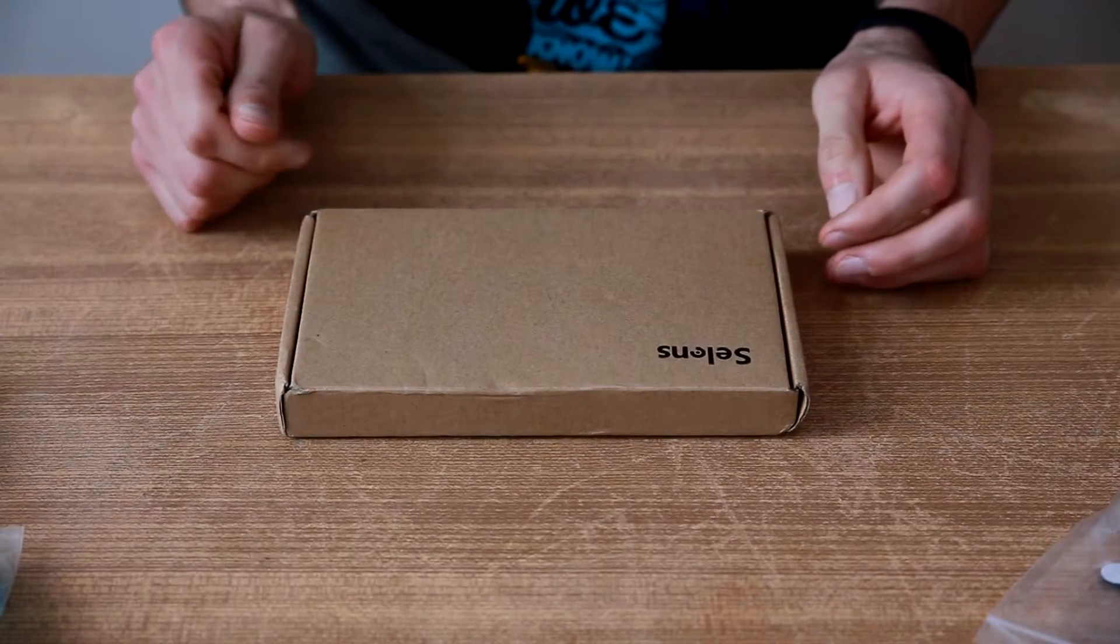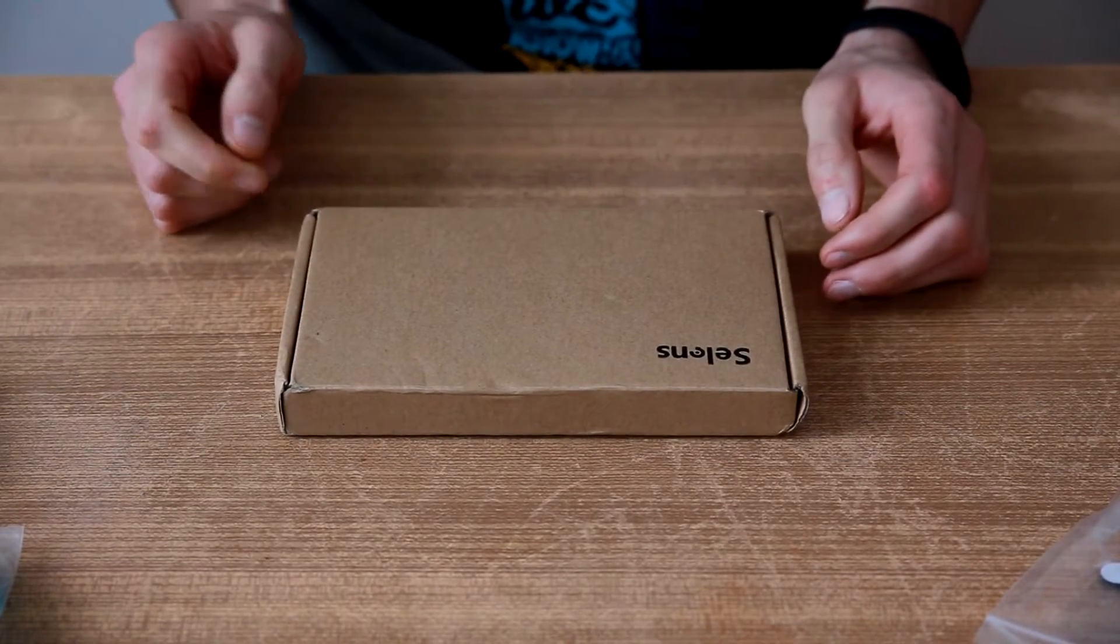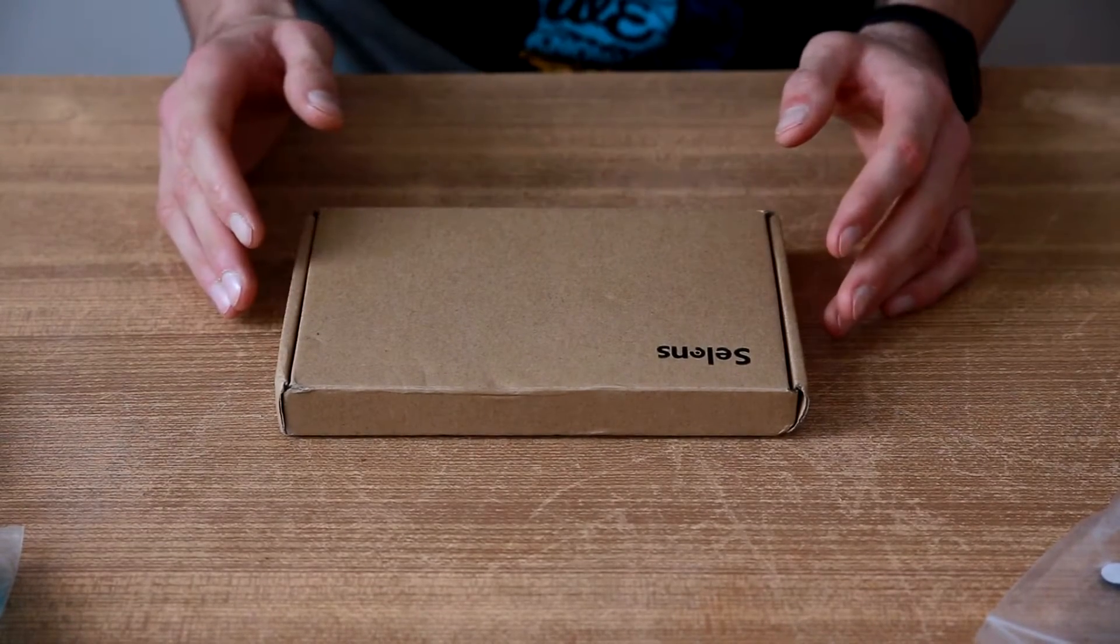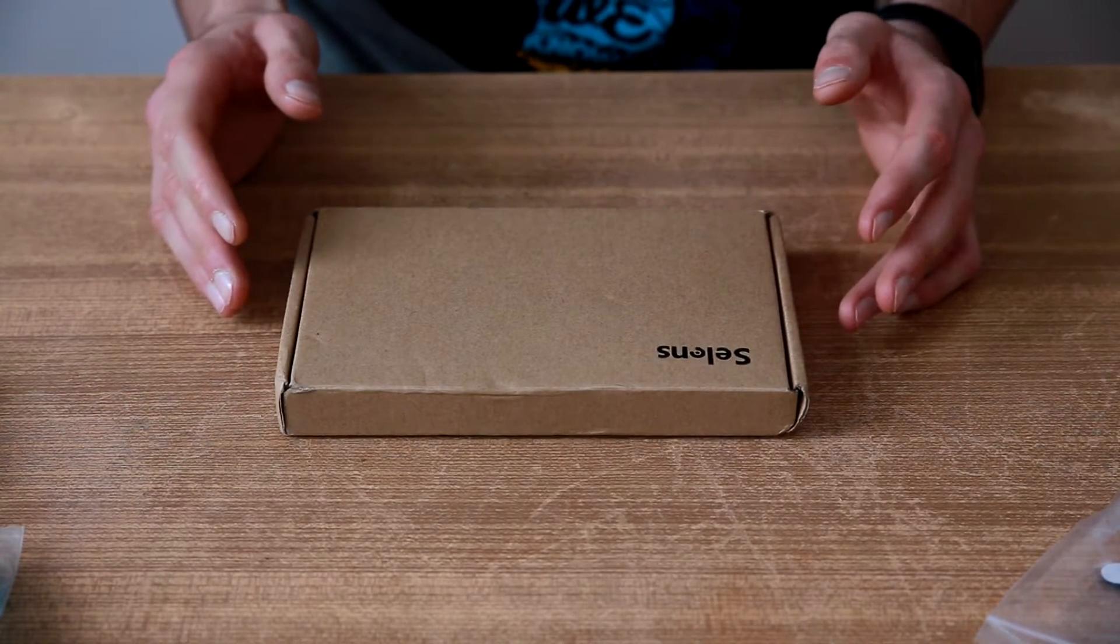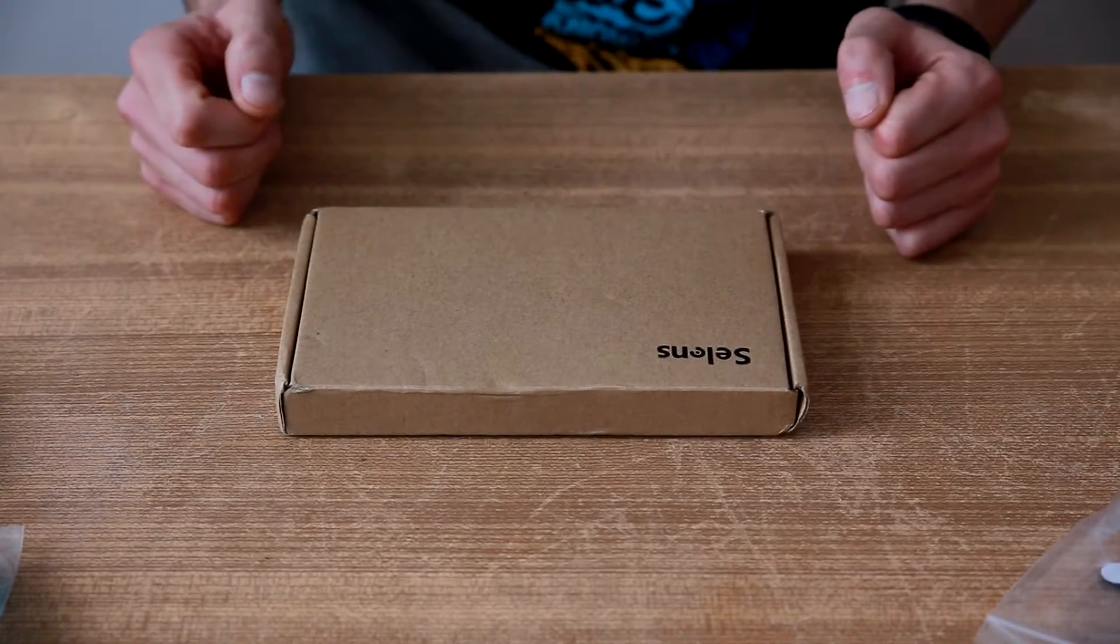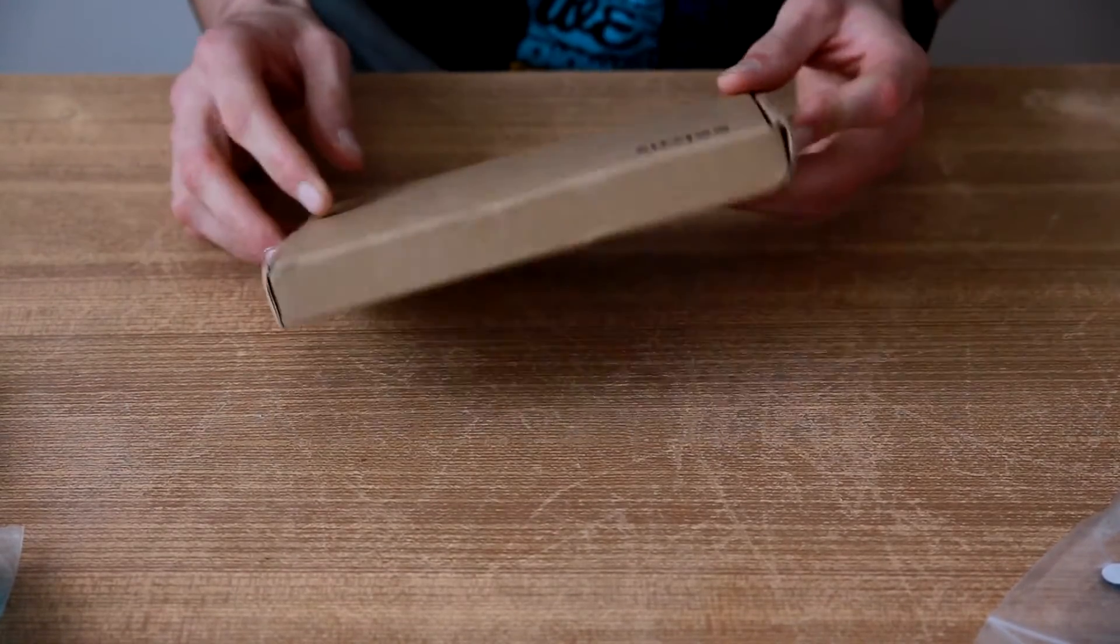In this video I'm going to do an unboxing on some gels that I purchased from China. I bought it because it's very similar to the Magmod system but with a much lower price in comparison with the Magmod system. The brand is called Selens.